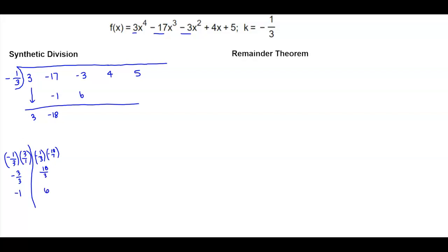Negative 3 plus 6 gives us positive 3. Then we take negative one-third multiplied by 3 over 1, which gives us negative 3 over 3, which is negative 1. So 4 minus 1 gives us positive 3.